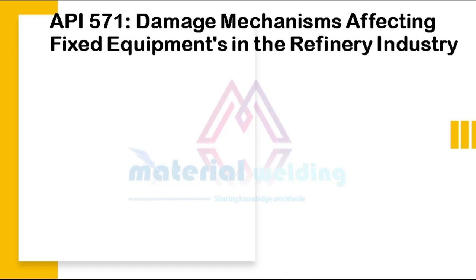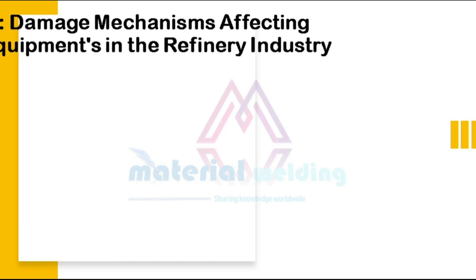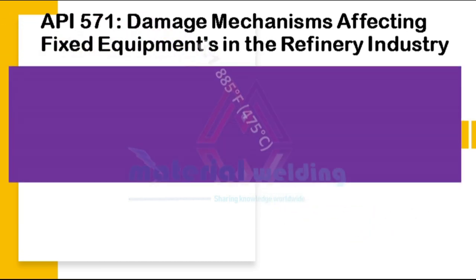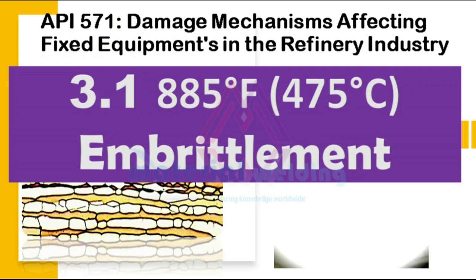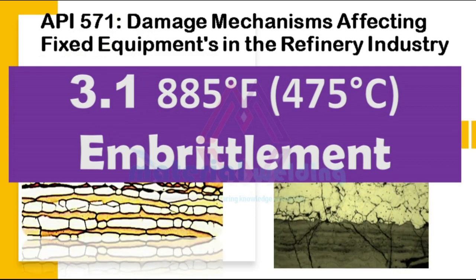Hello friends. Welcome to my YouTube channel Material Welding. Today's topic is 885 degrees Fahrenheit or 475 degrees Celsius embrittlement. This is the first damage mechanism listed in the API 571 2020 edition. We are going to cover all damage mechanisms of the API 571 by separate videos on each topic. Please subscribe to our channel to get regular updates on new videos.